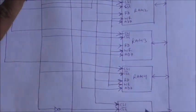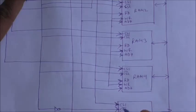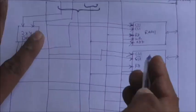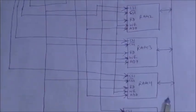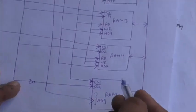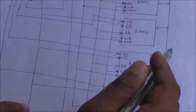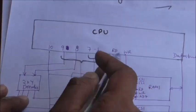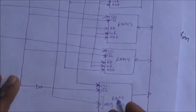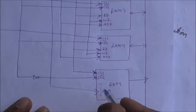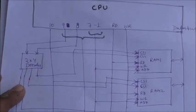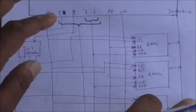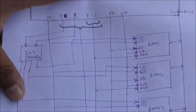When the read signal is enabled, the first chip select input is 1, and when the 10th address bit is 1, the second chip select input will be 0, so the ROM chip is enabled. Then these 9 address bits specify the address of a byte in ROM.